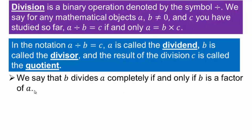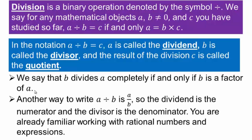We say that b divides a completely if and only if b is a factor of a. For example, 2 divides 6 because 2 is a factor of 6 — we can write 6 as 2 times 3, so 6 divided by 2 is 3. Another way to represent a divided by b is a over b. In the 1800s, people also used a slash, meaning a divided by b — many different notations have existed.